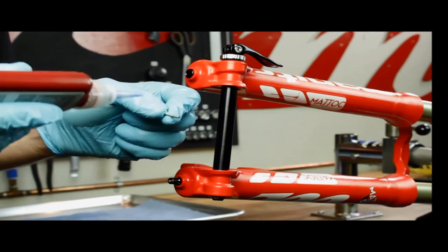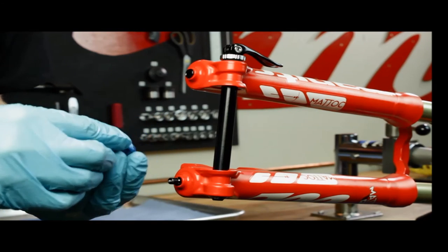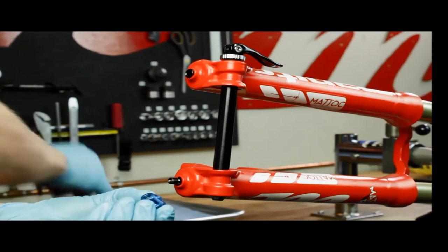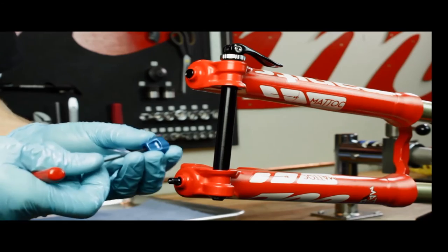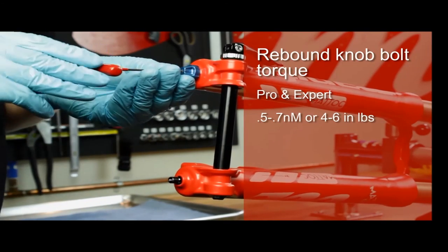Apply a small amount of blue loctite to the rebound rod bolt threads. Hold the rebound knob still while reinstalling the rebound knob bolt at a torque of 0.5 to 0.7 newton meters or 4 to 6 inch pounds.